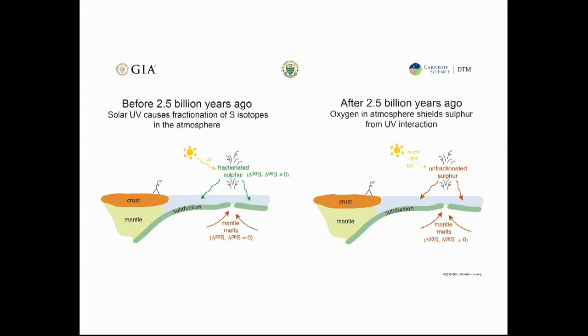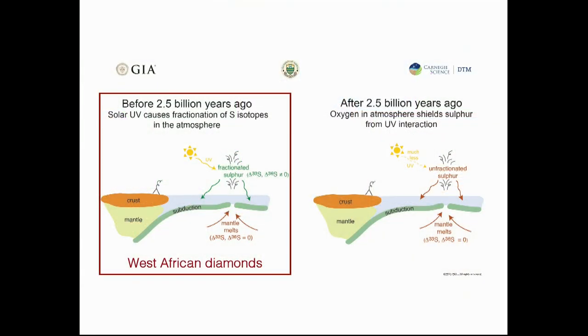Whereas prior to 2.5 billion years ago in the Archean, the sulfur isotopes became fractionated. This can become an important tracer for surface processes making their way into the cratonic root and potentially being taken up into diamonds. The sulfide inclusions within these diamonds from West Africa all contain this fractionated sulfur signature.